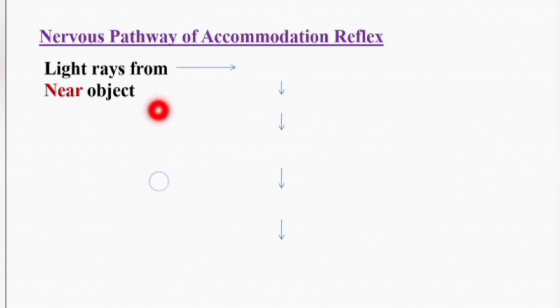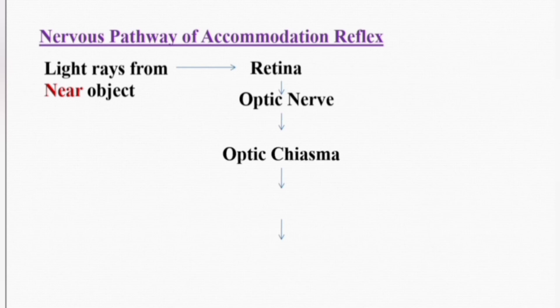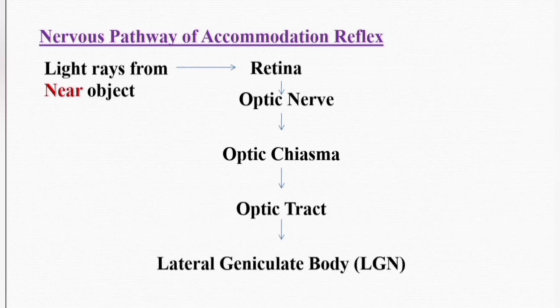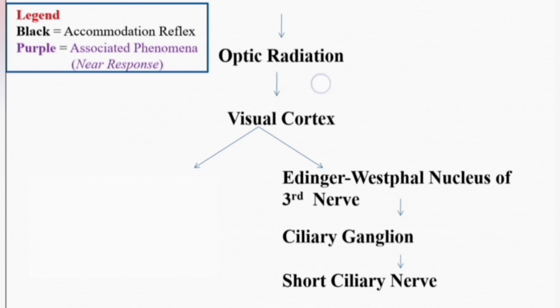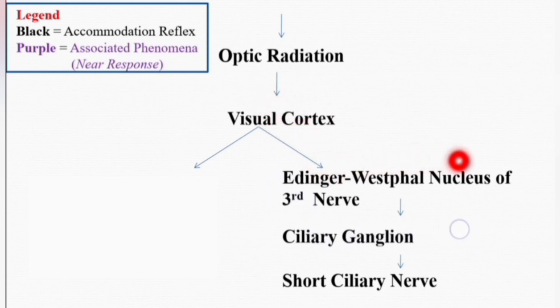Now we will discuss the nervous pathway of the accommodation reflex, which is very important from an exam point of view. When the light rays from any near or close object fall on the retina, photoreceptors are present there. From here, the impulses go along the optic nerve to the optic chiasma, from the optic chiasma to the optic tract, and from the optic tract to the LGN — lateral geniculate nucleus. From there, the impulses go along the optic radiation to the visual cortex.